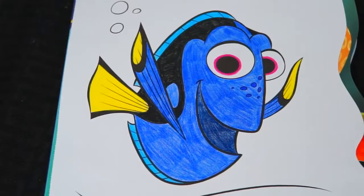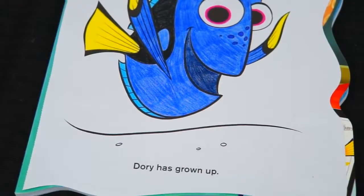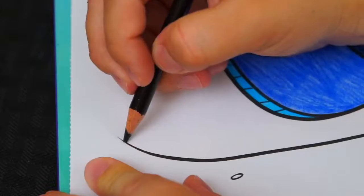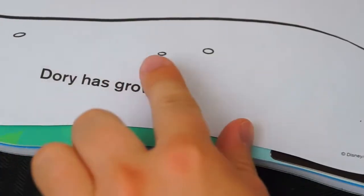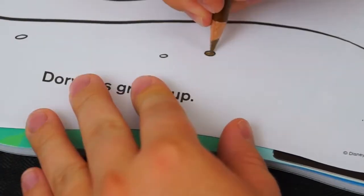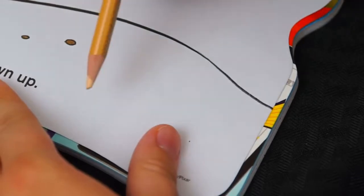Okay, I'm all finished coloring in Dory. Next, let's color in the sand down here at the bottom. Let's make these little pebbles brown, and let's make the sand light tan.